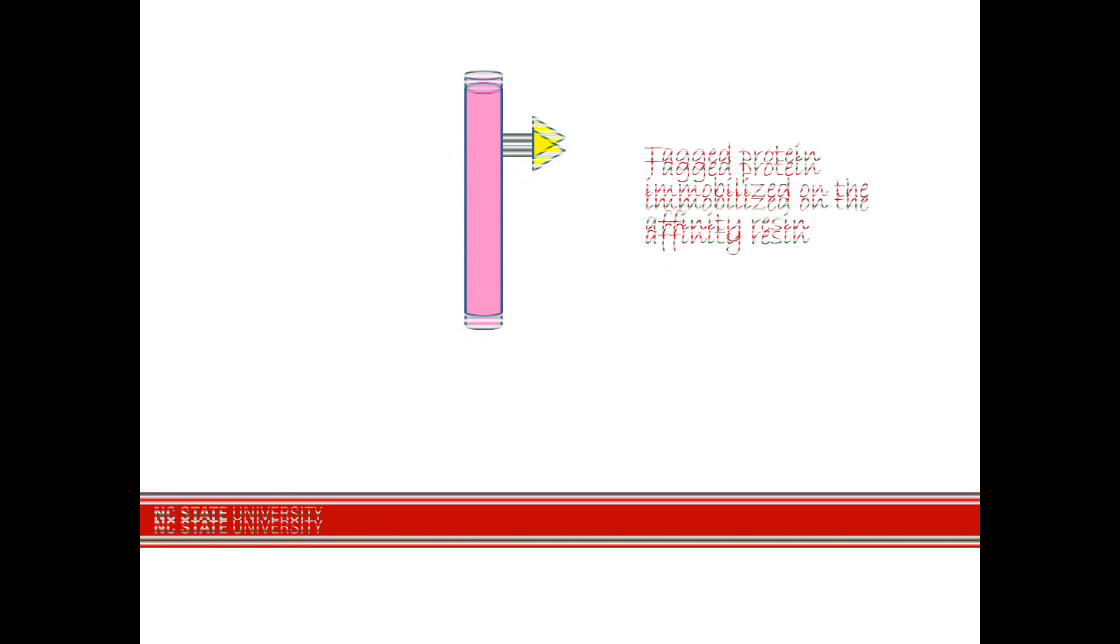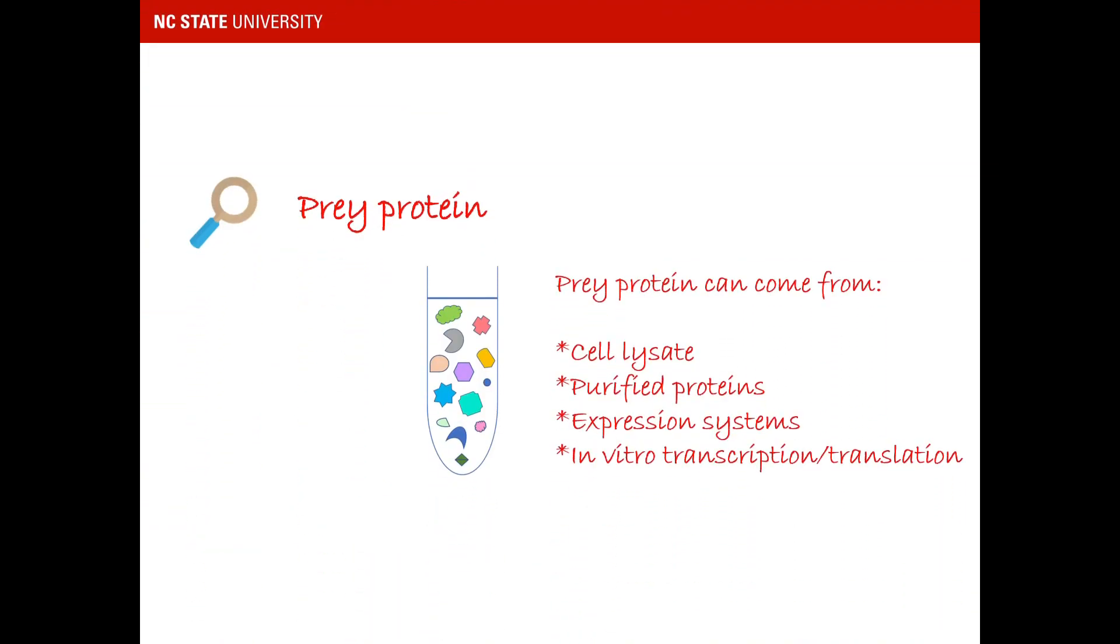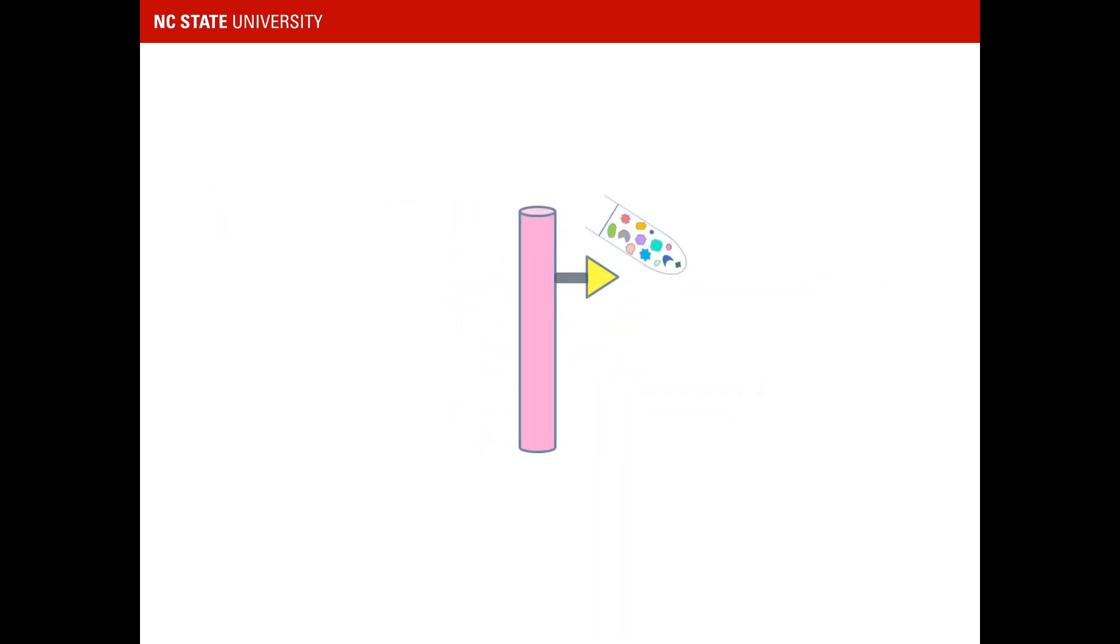The prey protein might be obtained from different sources, such as cell lysate, purified proteins, expression systems, or in vitro transcription and translation. All the proteins, except for the prey interacting with the bait, will flow through the column, and those unbound proteins can be washed away.